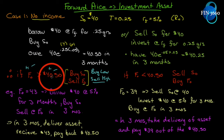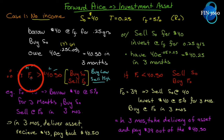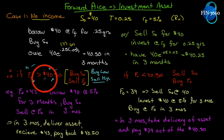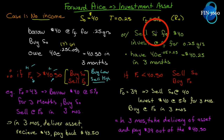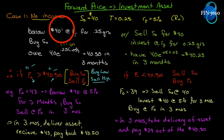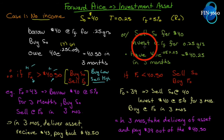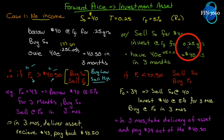If the futures price is greater than $40.50, arbitrageurs will step in. The selling of the futures contract pushes that price down, and the buying of the spot asset pushes that price up, until the arbitrage opportunity disappears. Now let's go the other way: instead of buying the asset, let's sell it. We short the asset and sell it for $40.